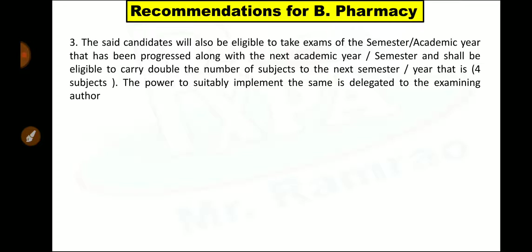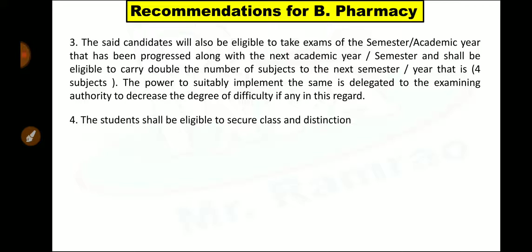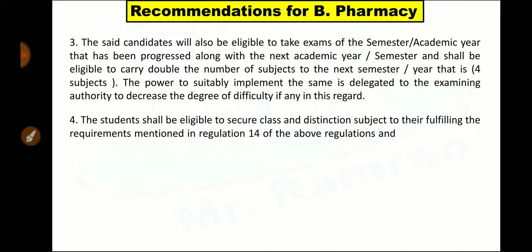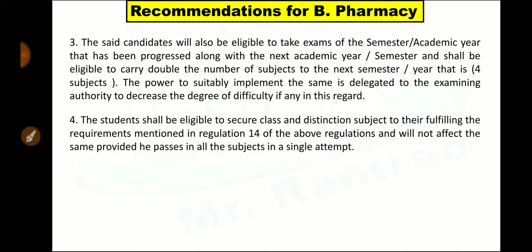The power to suitably implement this is delegated to the examining authority to decrease the degree of difficulty if any in this regard. Currently we don't know how they are going to decrease the difficulty, whether it is in the form of difficulty level of the examinations or other things — this authority is given to the examining authorities like universities. They have to decide how to conduct the examination. The fourth point is: the student shall be eligible to secure class and distinction subject to fulfilling the requirements mentioned in Regulation 14 of the above regulations, provided they pass in all the subjects in a single attempt.